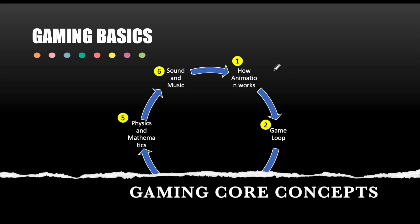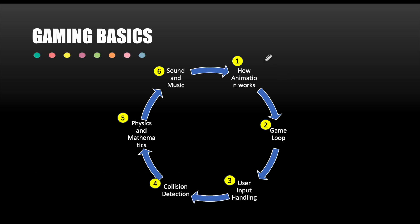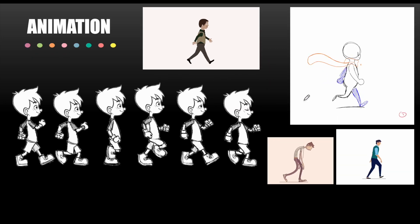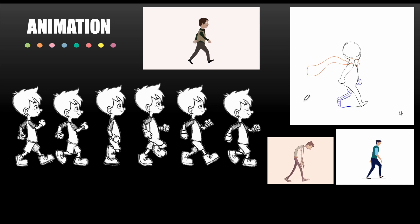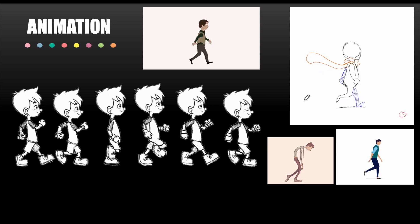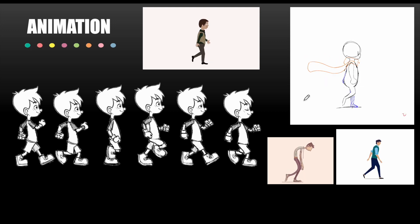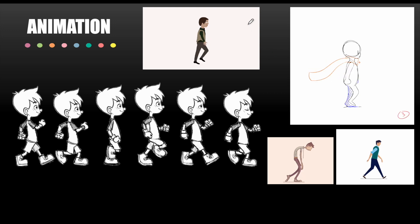There are some core things we should understand with respect to game programming. The first is how animation works. Before we understand animation, we should know what a frame is. A frame is a single image in a sequence of images that, if played in rapid succession, gives the illusion of motion — and this is exactly what is used in animation.